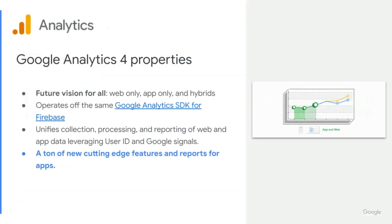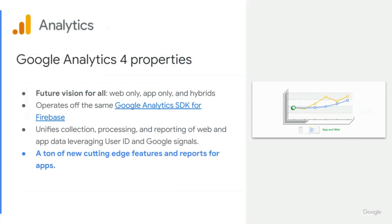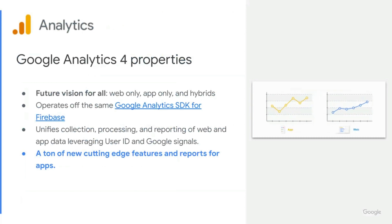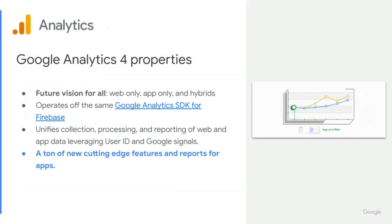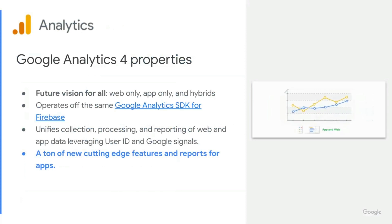Google Analytics for Properties are the future vision for all. It captures web data, or app data, or both combined. It operates off the same Google Analytics SDK for Firebase as the Firebase UI. And it helps to unify collection, processing, and reporting of web and app data, leveraging user ID and Google signals.